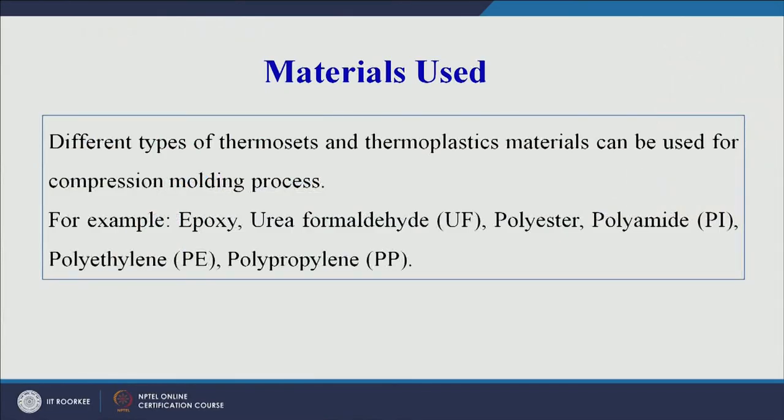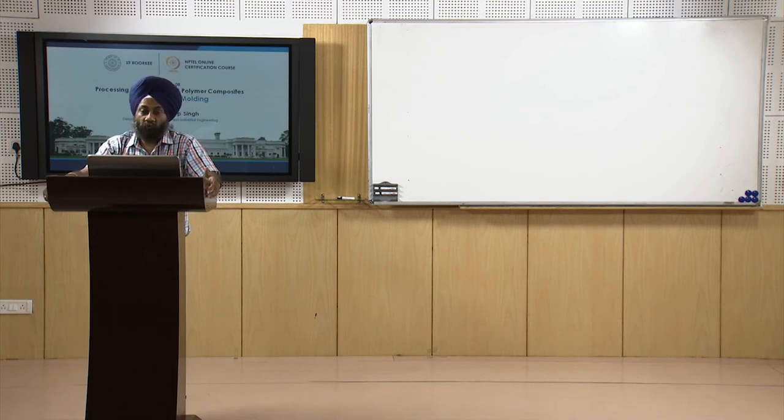Different types of thermosets and thermoplastics can be used in compression molding. Examples include epoxy, urea formaldehyde, polyester (thermosets), and polyamide, polyethylene, and polypropylene (thermoplastics). A variety of plastic materials are thus suitable for this process.